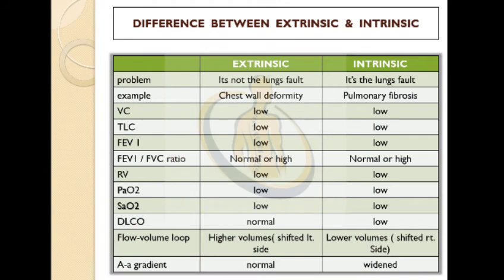Moving towards the major part of RLD — the difference between intrinsic and extrinsic. In the first point, we have problems: in extrinsic, it's not the lung's fault, and in intrinsic, it's the lung's fault. Example: for extrinsic, we can have chest wall deformity; for intrinsic, we can have pulmonary fibrosis. Vital capacity is low in both extrinsic and intrinsic.